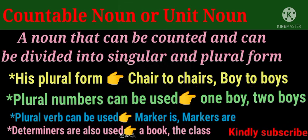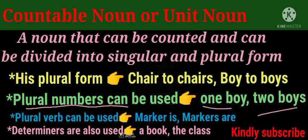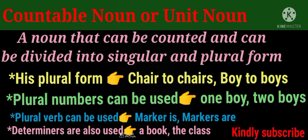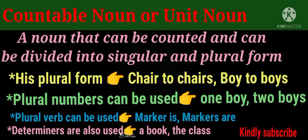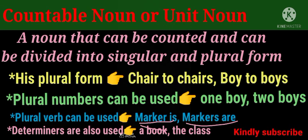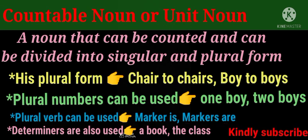Plural numbers can be used, for example: one boy, twenty boys. Plural verbs can also be used — the markers are 'is' or 'are'. Determiners are also used, such as: a book, the class.